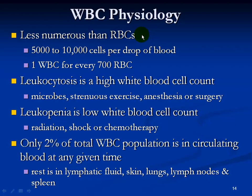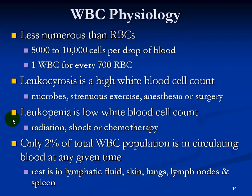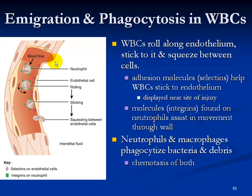White blood cells are far less numerous than red blood cells. Leukocytosis is a high white blood cell count and can result from microbial invaders, strenuous exercise, anesthesia, or surgery — anything that causes leukocytes to act as defenders of the body. Leukopenia is a low white blood cell count and can be due to radiation, shock, or chemotherapy, primarily cancer treatment. About 2% of the white blood cell population is circulating in the blood at any given time; the rest is found in lymphatic fluid, skin, lungs, lymph nodes, and spleen.